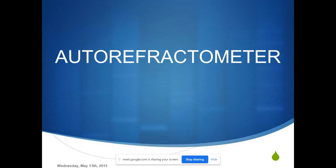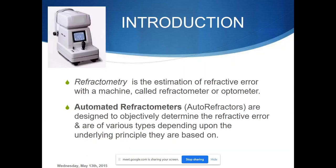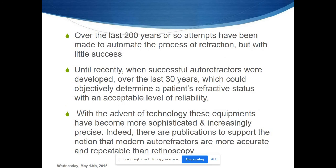We'll look at the autorefractometer in detail — its principles, how it began, the types, and how it actually evolved. Basically, an autorefractometer is for estimating the refractive error, which is why it is called a refractometer or optometer. Most autorefractometers are designed to objectively determine the refractive error, and there are different principles which they use, which we will be discussing in later slides.